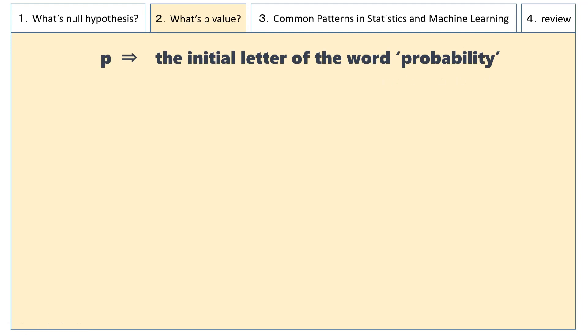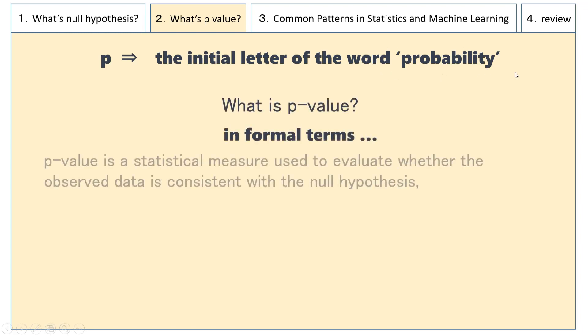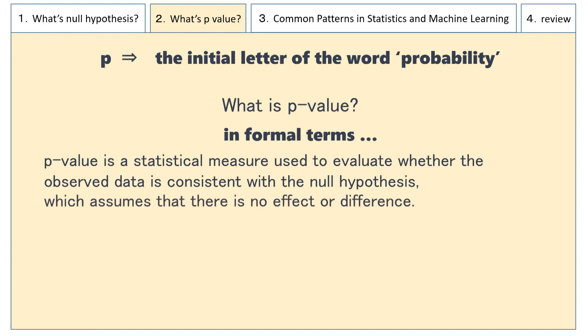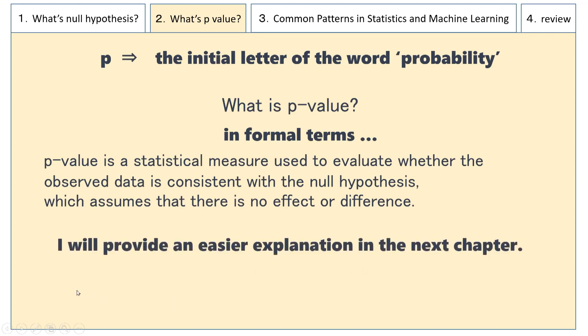In formal terms, p-value is a statistical measure used to evaluate whether the observed data is consistent with the null hypothesis, which assumes that there is no effect or difference. I will provide a more detailed explanation in chapter 3, so for now a rough understanding is sufficient. Just remember that p-value refers to probability.